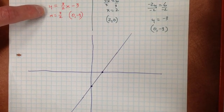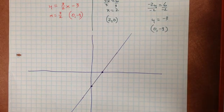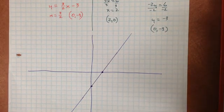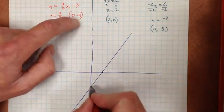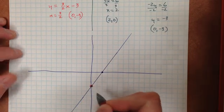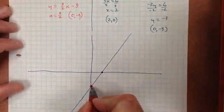Now we will check the y equals mx plus b slope-intercept form, and hopefully that will match up. It should fall on the same line because it is coming from the same graph. I will start at (0, negative 3), and I will rise 3 and run 2.